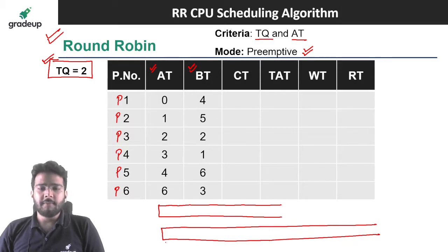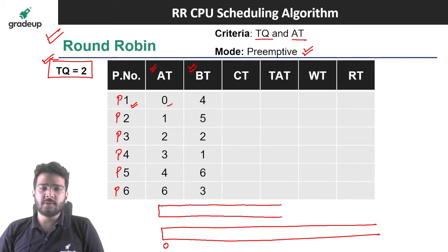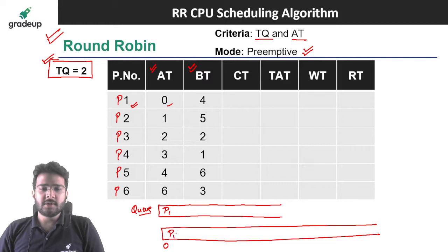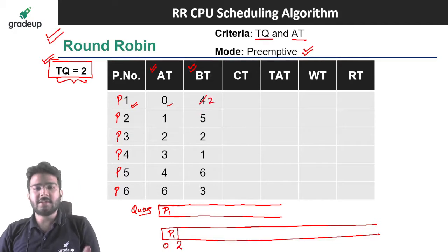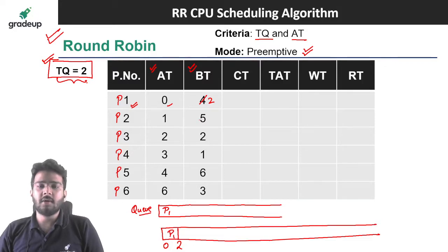At 0 units of time, P1 has arrived in the ready queue, so we enqueue P1 and schedule it. We compare the time quantum and burst time — whichever is less, we schedule the process for that amount of time. Since time quantum is less than the burst time of P1, we schedule P1 for 2 units of time.